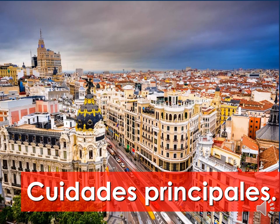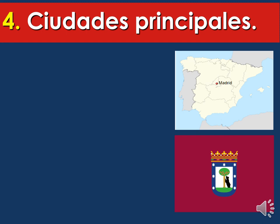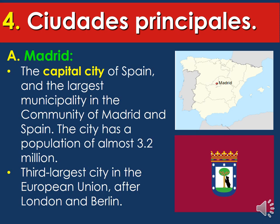Ciudades Principales — now we're going to start talking about the main cities of España. This picture represents what a part of Madrid looks like — the buildings are really old and the avenues are huge. In Spain they have metros and buses, but mainly people like to walk. Madrid is actually in the center of España. It is the capital city and the largest municipality in the community of Madrid and Spain, with a population of almost 3.2 million people. It is the third largest city in the European Union after London and Berlin.